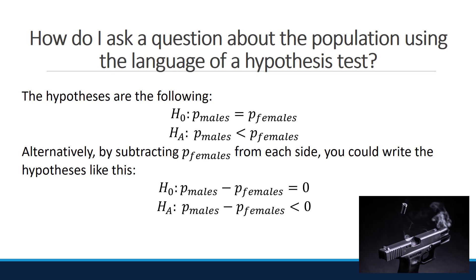Example: Is the proportion of males who support gun control less than the proportion of females who support gun control? The parameter is p_male minus p_female, where p_male represents the proportion of males who support gun control and p_female represents the proportion of females who support gun control. We are trying to prove that the proportion of males is less than the proportion of females — this is our research question. Therefore, in the alternative we have p_male less than p_female, and under the null we have p_male equal to p_female. It is common to have the equal sign under the null hypothesis. You could alternatively have p_male greater than or equal to p_female under the null.